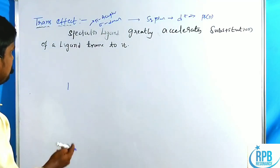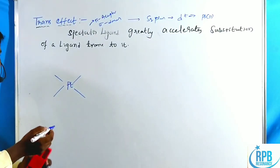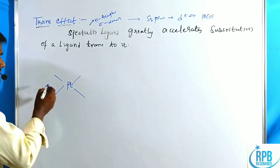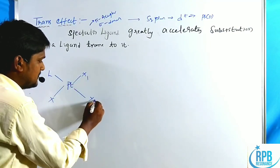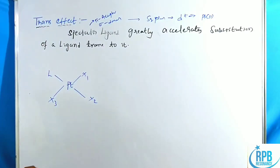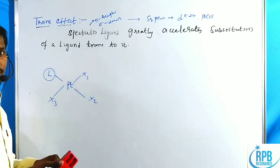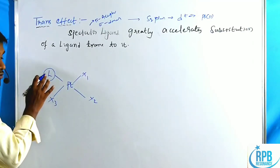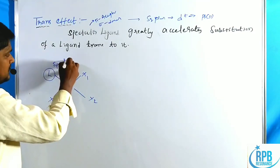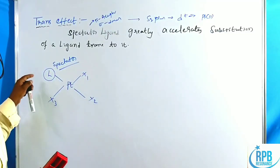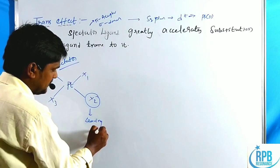Let us go through the simplest representation of the trans effect using a platinum square planar complex with four ligands: one spectator ligand L and three general ligands X1, X2, X3. The ligand which is unaffected and not the leaving group is the spectator ligand. Let us assume X2 is the leaving group.